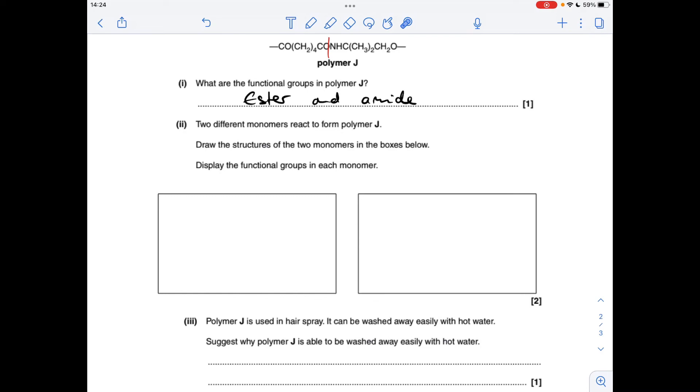So B part two: we've got to come up with the structures of two different monomers to form polymer J. You'll notice I put this red line here—that's where the join is. What could this have been to start with? We could have had either a dicarboxylic acid or it could have been a diacyl chloride. For this right-hand monomer, we're going to need an NH2 group here; this needs to be an alcohol group, which means the monomer is going to look like that.